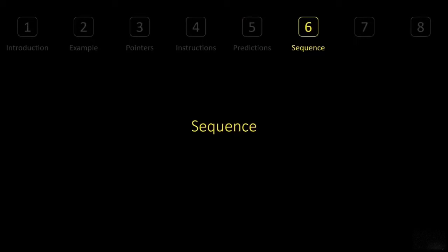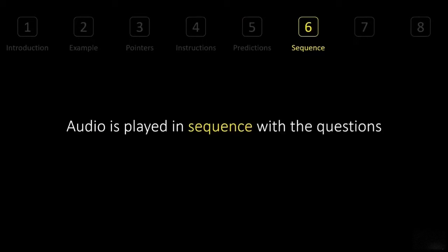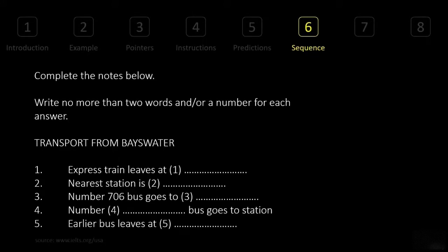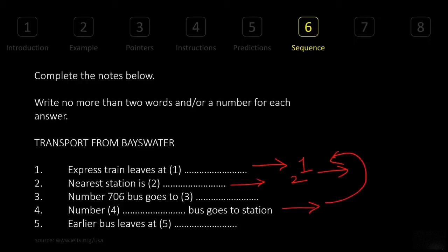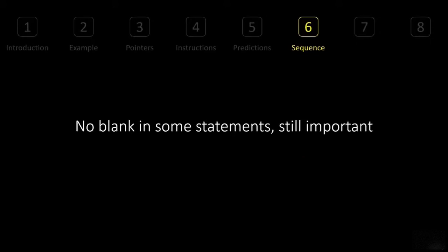The third pointer is sequence. The audio is always played in sequence with the questions. When you look at questions one through five, the audio will address information for question one first, then two, then three, and so on. There may be information between them, but they will never talk about question four and then jump back to question one. The sequence always goes forward — this applies to every question type in listening.